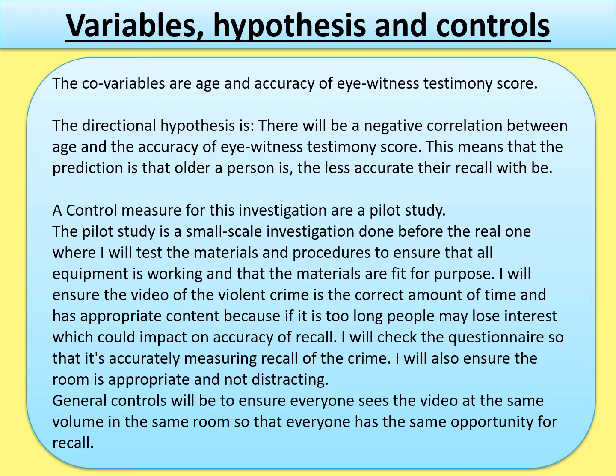It's asked for a directional hypothesis, so remember this is a correlational hypothesis, not an experimental one. The hypothesis is: there will be a negative correlation between age and the accuracy of eyewitness testimony score. You can add that this means the older a person is, the less accurate their recall will be. The word 'negative' is what makes it directional. For a non-directional you would just say 'there will be a correlation,' and for a null hypothesis: 'there will be no correlation between the co-variables.'